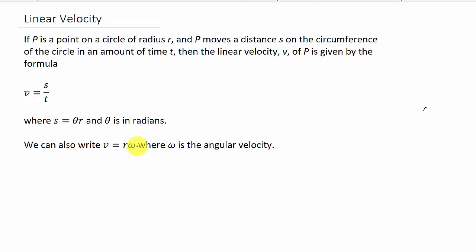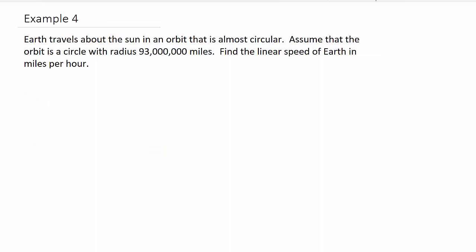Alright. So let's take a look at an example. So let's look at the fourth example on linear velocity. It says Earth travels about the sun in an orbit that is almost circular. Assume that the orbit is a circle with radius 93 million miles. Find the linear speed of Earth in miles per hour. Alright. So let's write our formula down.